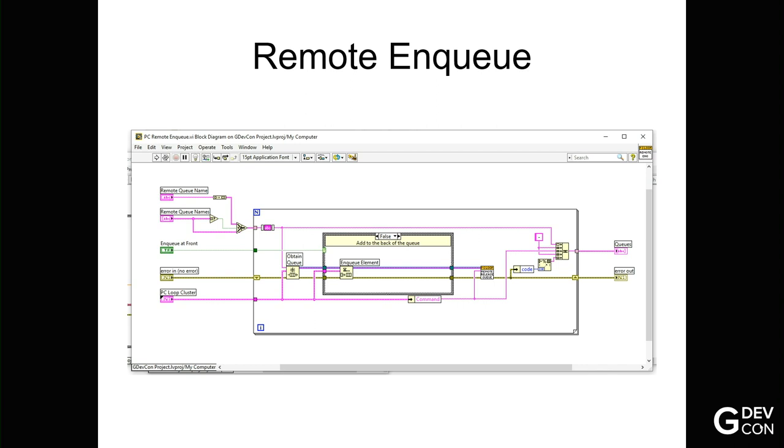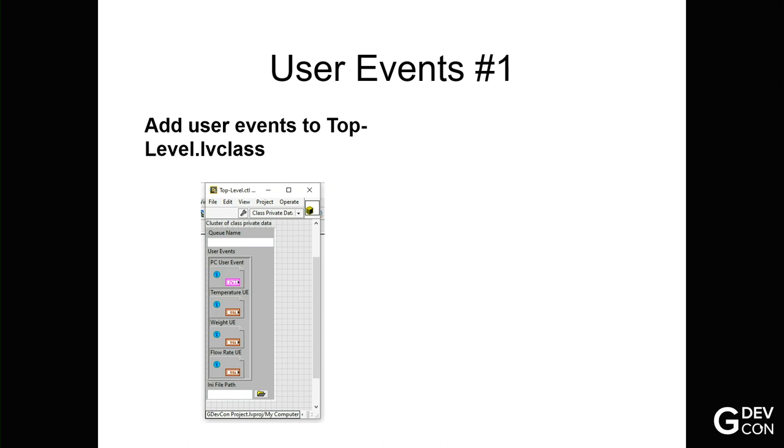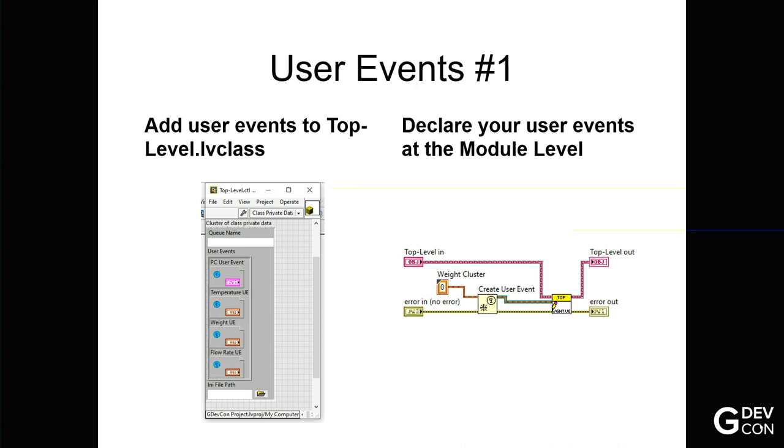So how do we do a remote enqueue? This is hopefully stuff you know reasonably well. This is just a remote enqueue VI I've made and I've used over the years. You obtain a queue, you give it the name, that's the important thing, so module one heater chiller. You enqueue your element, and then you close the queue, and that's the job done. So you might use that to send data from a sub-module to the data logger. Using user events, you declare all your user event types at the top-level class, so that then any child class can inherit those and use them. So that's how you declare a user event at the module level. You choose your term, you create your user event, and you pop it into the wait user event in the top-level cluster.